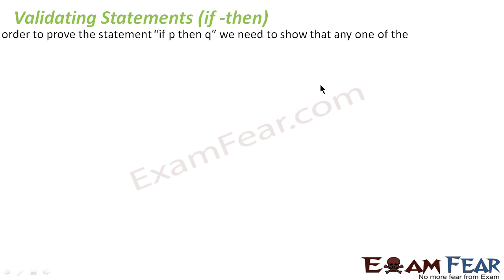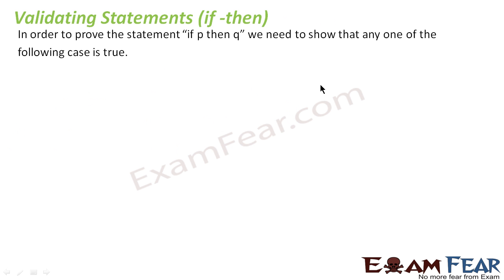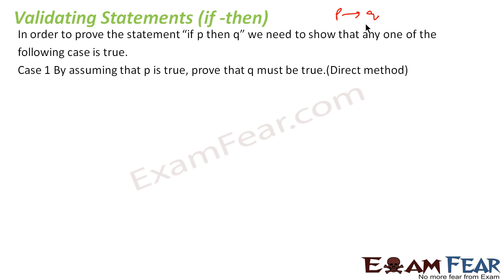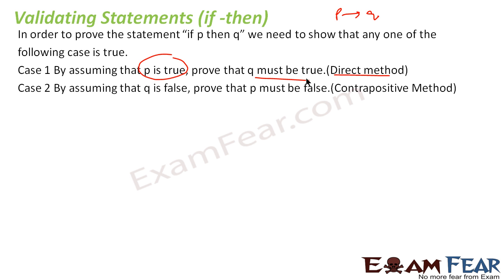To validate IF-THEN statements — that is, statements of the form p implies q — we have two approaches. The first is the direct method: we assume p is true and then prove that q is true. The second is the contrapositive method: we take the contrapositive, which states if NOT q then NOT p. That means we assume q is false and then prove that p is also false.